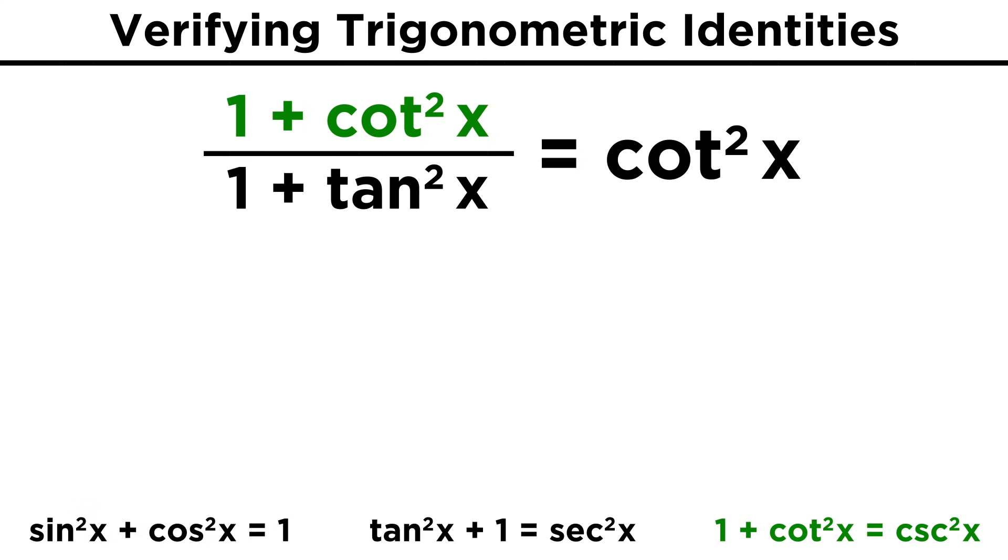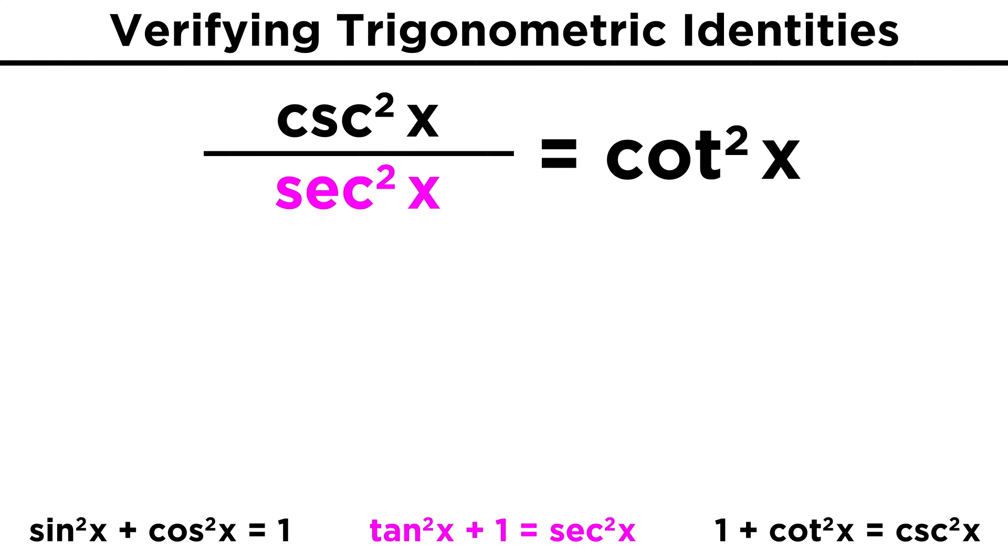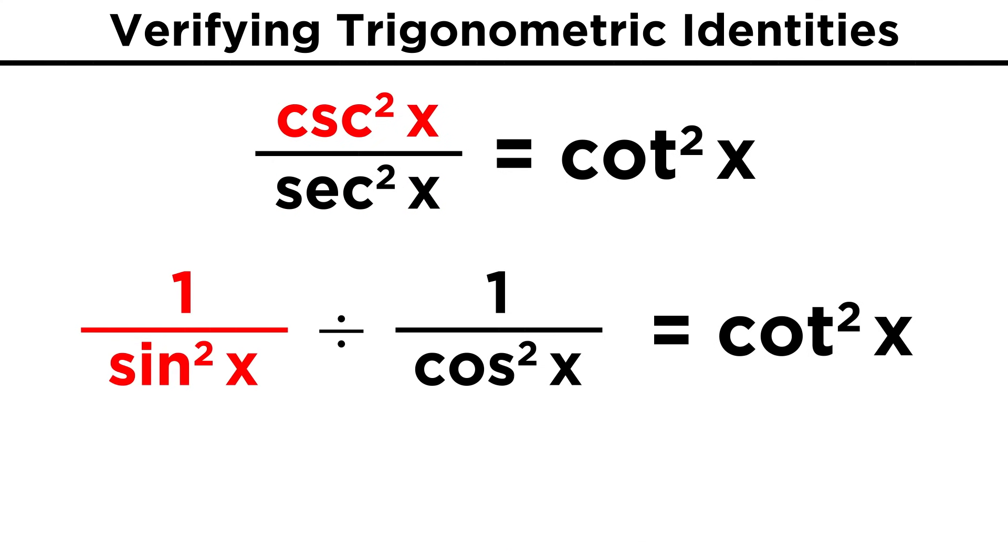Now we have one plus cotangent squared, which is equal to cosecant squared. Then we can turn the denominator into secant squared. Just like that, we are almost done. Now we can rewrite cosecant squared as one over sine squared, and secant squared as one over cosine squared. We know that dividing by a fraction is the same as multiplying by its reciprocal, so we bring that up here and flip it.